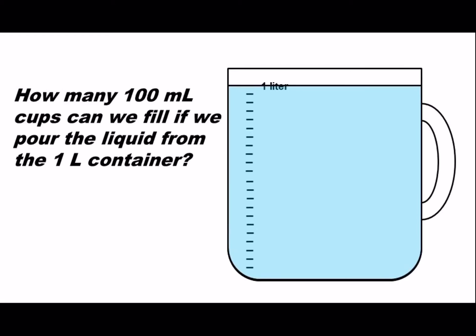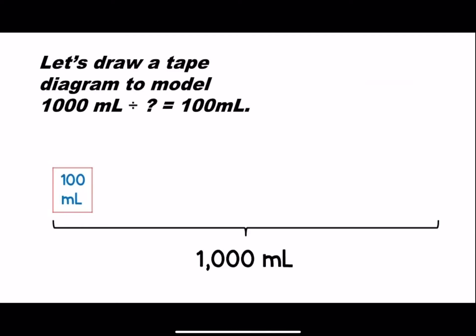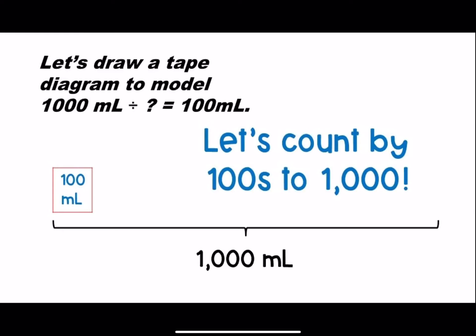How many 100 milliliter containers can we fill if we pour the liquid from the 1 liter container? We know that a liter is the same as 1,000 milliliters. We want to know how many times 100 milliliters can go into 1,000 milliliters. Let's draw a tape diagram to model 1,000 milliliters divided by something equals 100 milliliters.